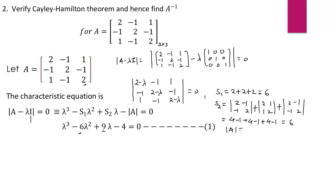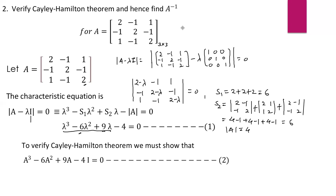Using the traditional method we find det(A) equals 4. So the characteristic equation is lambda³ minus 6·lambda² plus 9·lambda minus 4 equal to 0. By the Cayley-Hamilton theorem, the given matrix A satisfies this equation — instead of lambda we write A: A³ minus 6A² plus 9A minus 4I equal to 0. To verify, we need to compute A² and A³.